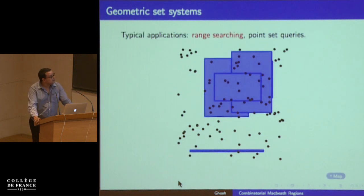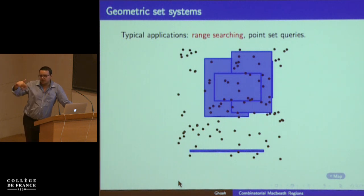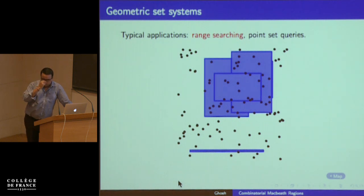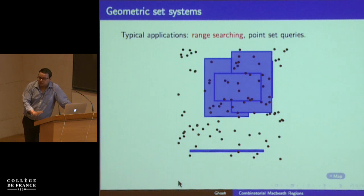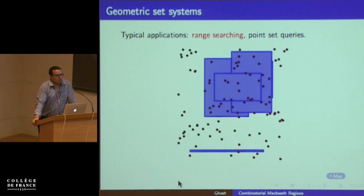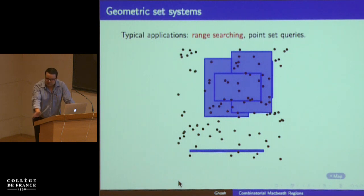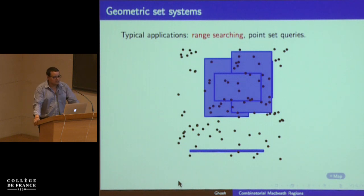Another interesting object: you have some set of points in R², and now you're generating the subset by intersecting it with rectangles. The talk is about set systems that you get by intersecting with semi-algebraic regions. I won't define semi-algebraic regions, but for people who know them, the technique goes through for semi-algebraic regions. For those who don't, think of unit disks and rectangles.